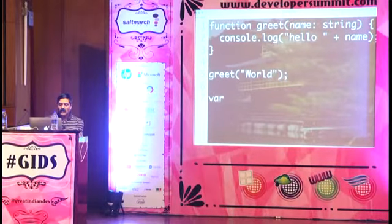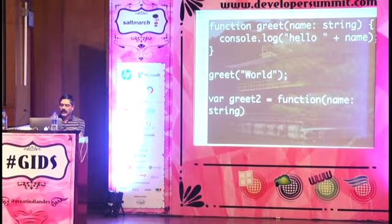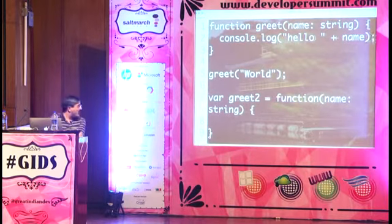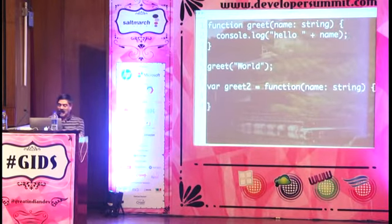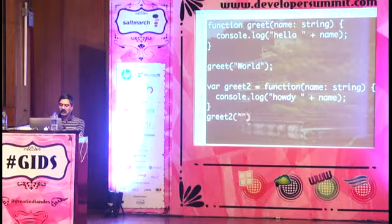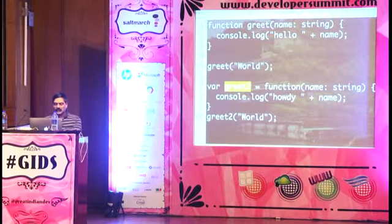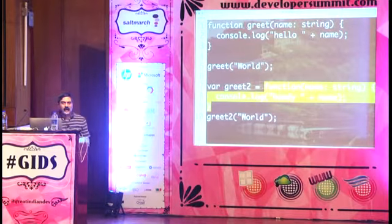Another way to write the function is as an anonymous function assigned to a variable: `var greet2 = function(name: string) { console.log('howdy ' + name); }`. Then call `greet2('world')` and it prints 'howdy world'. You can write it either way — as a named function or as an anonymous function assigned to a variable — it's your choice.